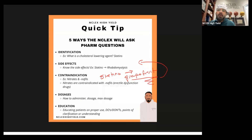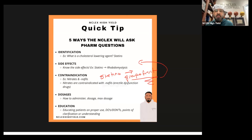So a recap of the five ways that the boards are going to ask pharmacological questions. First and foremost is just identifying the drug — knowing what it is, a freebie type of question. Know your drugs, identify them. Side effects: if they're commonly prescribed drugs for a common medical condition, you have to know the side effects and educate your patients on them. Contraindications — doesn't have to be another drug; it could be any type of product, vitamin, mineral, or in the situation of produce, grapefruit.